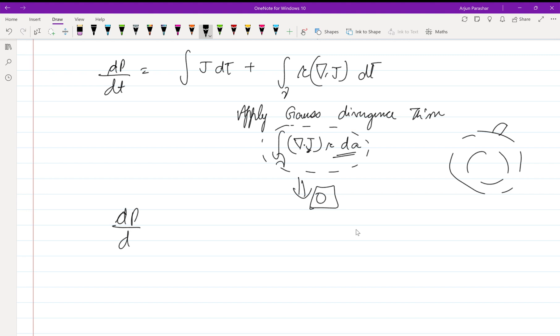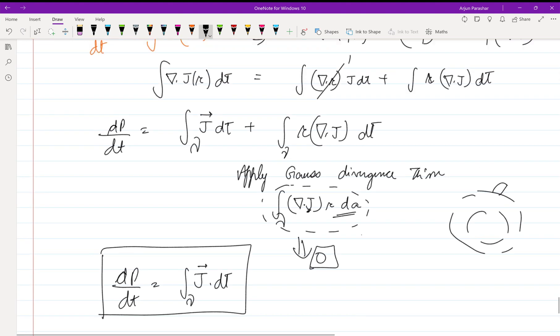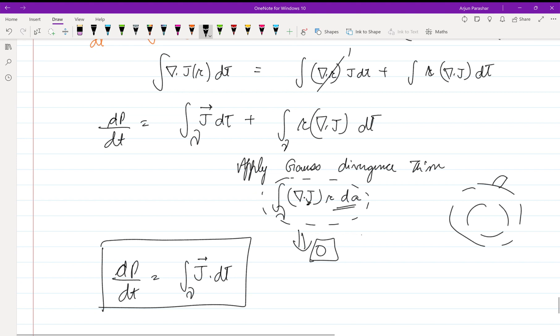If we integrate over the surface, this term will become zero because j is zero on the surface. So we get dp by dt is equal to integration j dot d tau over a closed volume. This is what we need to prove.